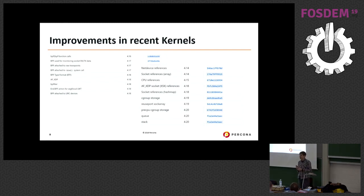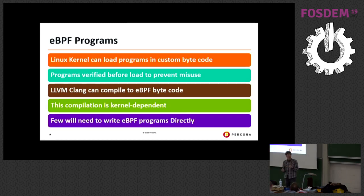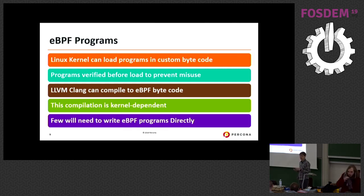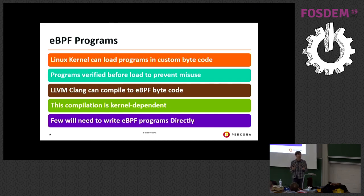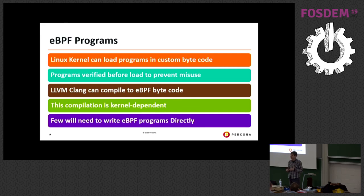eBPF consists of special bytecode — small programs you insert into the kernel which are executed when different events are triggered. What's great about eBPF is that checks are done before those programs are loaded, so it's hard to make a basic mistake that crashes your system. For example, if you put a tight loop in an eBPF program it won't pass validation and won't be included.